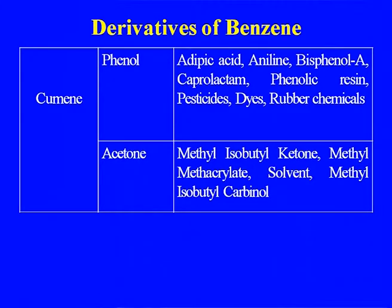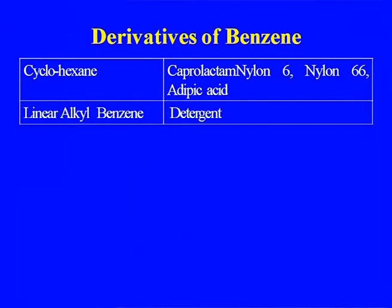From benzene we get cumene, and from cumene we get phenol and acetone as a byproduct. Phenol's outlets include adipic acid, aniline, bisphenol (a key raw material for polycarbonate), caprolactam, phenolic resin, pesticide, dyes, rubber chemicals, acetone, methyl isobutyl ketone, methyl methacrylate, solvents, and methyl isobutyl carbonate. Cyclohexane, another benzene derivative, goes to caprolactam, nylon 6, nylon 66, and adipic acid.